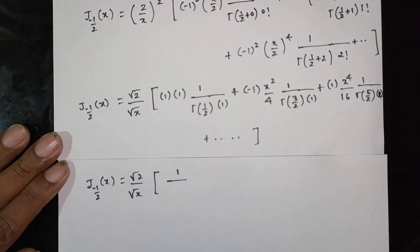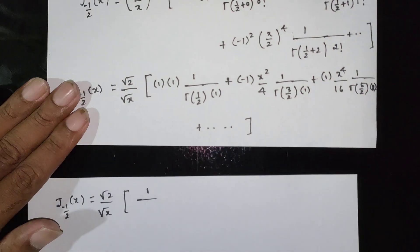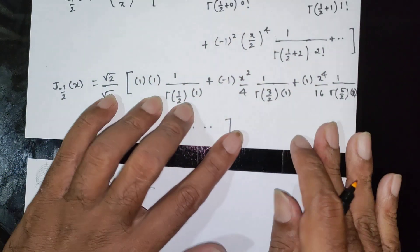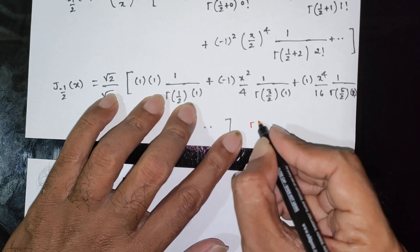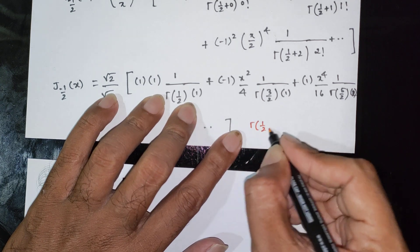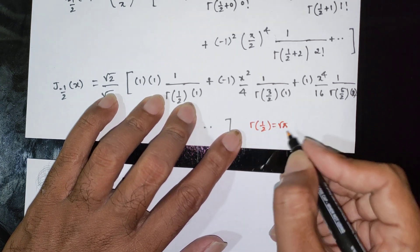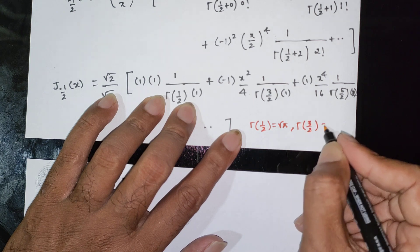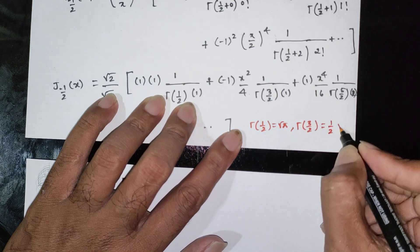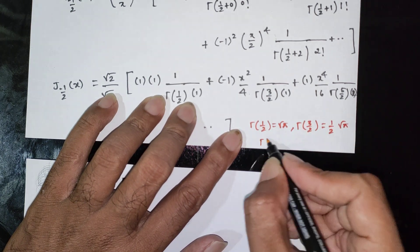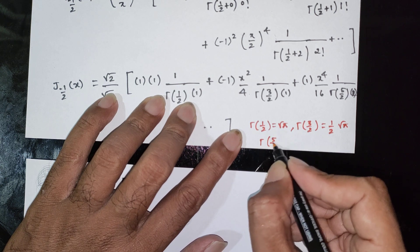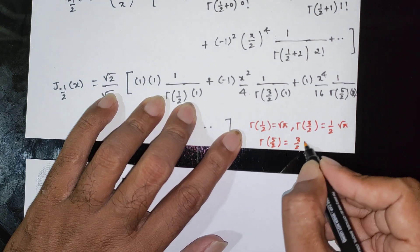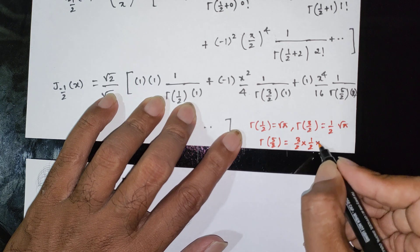Now applying the gamma function values from the formula: Γ(1/2) = √π; Γ(3/2) = (1/2)√π; Γ(5/2) = (3/2)(1/2)√π.